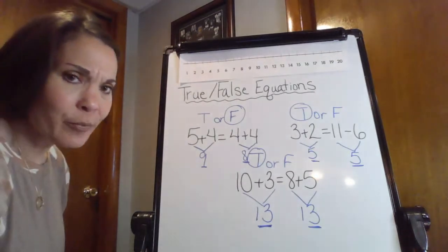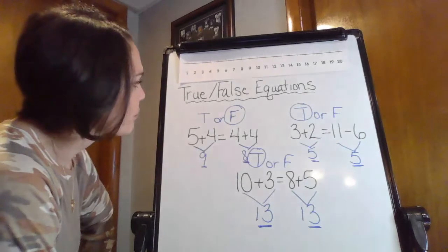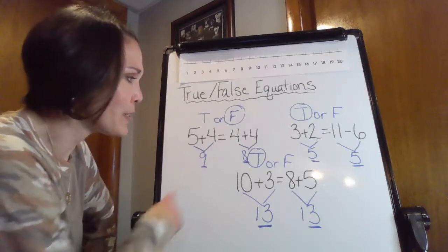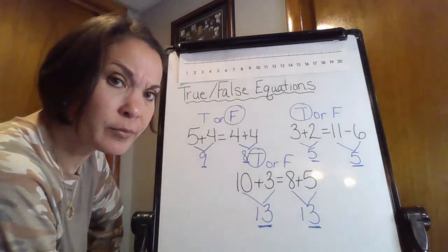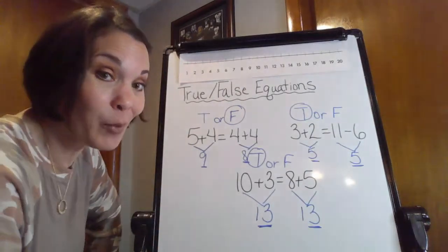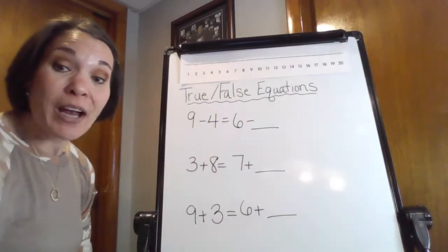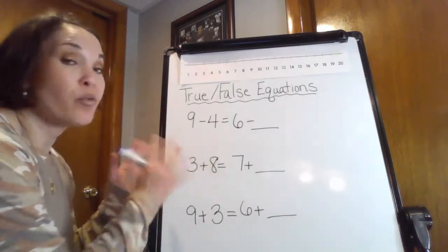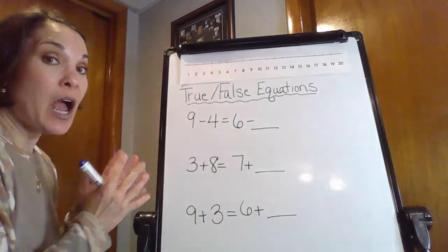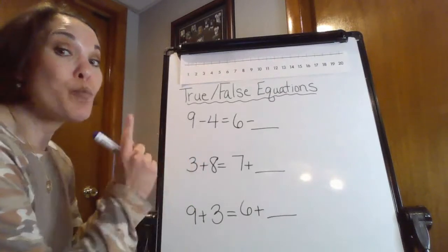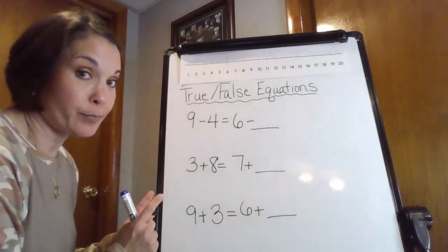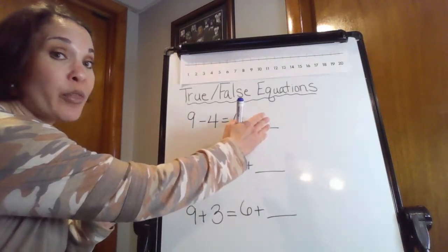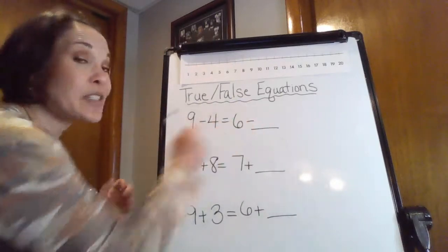So here's the next question. What happens if something is missing and I need to make it true because sometimes you might have some missing numbers here? Well, hold tight and we're going to figure that out. Hey everybody. And we're back. So what we're going to be looking at now is something is missing in these true false equations.